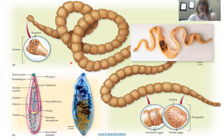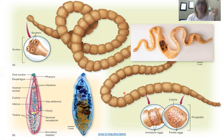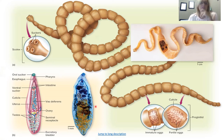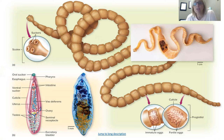This is a cestode, or tapeworm. It shows the scolex — basically the head portion with suckers it uses to attach to your body — and this long segmented body. You can see views of mature proglottids, which are these sections full of hundreds of fertile eggs — basically little sections packed with babies. This is an actual tapeworm. The structure of the trematode, or liver fluke, shows that these organisms are basically big reproductive structures — testes, ovaries, seminal receptacle, vas deferens — most of the body is about reproduction.